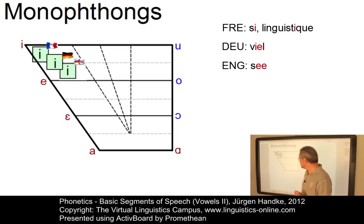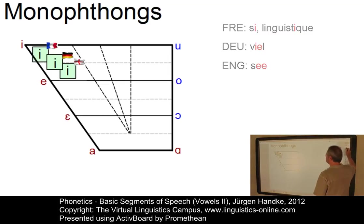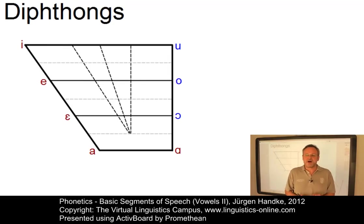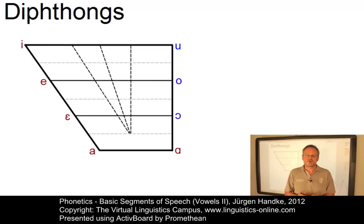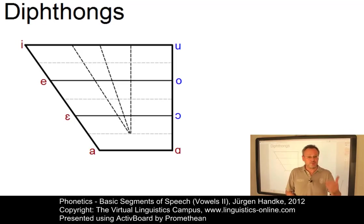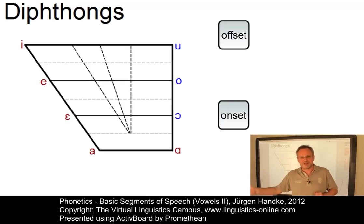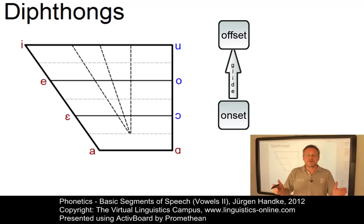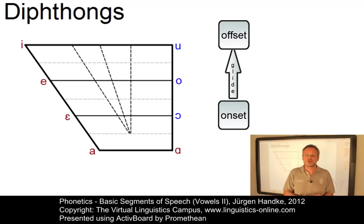Let us now look at the second type of vowels: the diphthongs. A diphthong is a vowel which undergoes considerable change of quality during pronunciation. Therefore it appears to have two parts — an onset, the first vowel, and an offset, the second vowel. And between them there is a transition from the first to the second, the so-called glide.